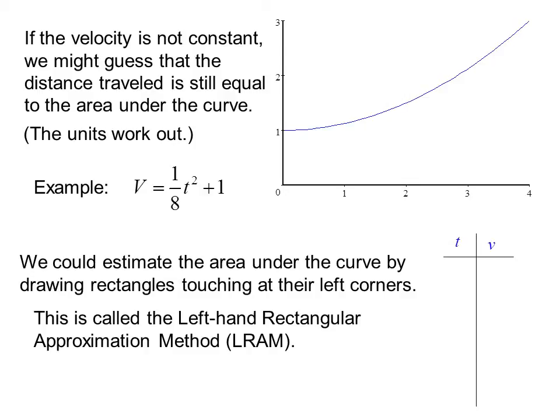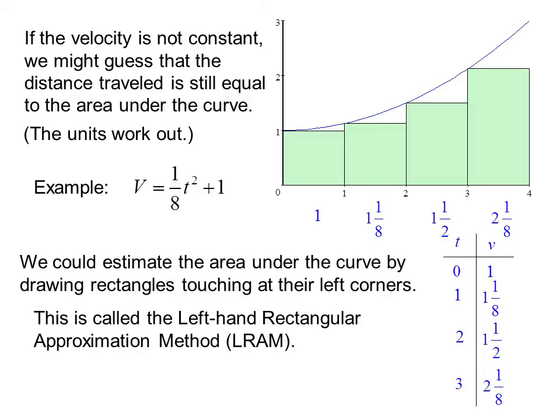We make a table of t and v and choose t values to the left of each rectangle. At t is 0, v is 1, so we draw a rectangle with a height of 1. At t is 1, v is 1 and 1/8. At t is 2, v is 1 and 1/2. At t is 3, v is 2 and 1/8.